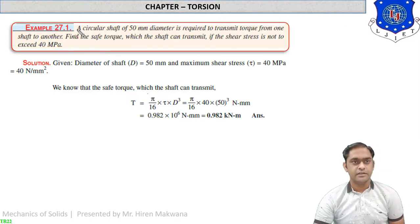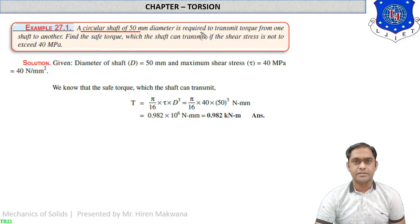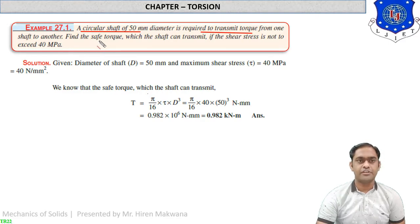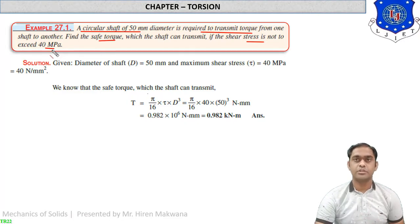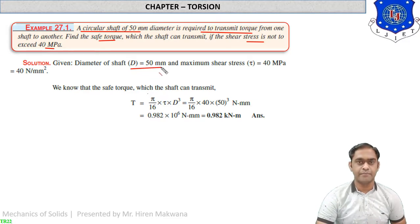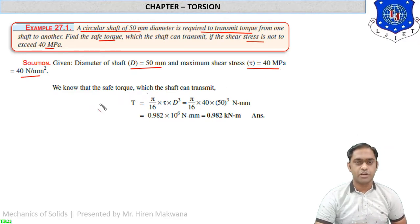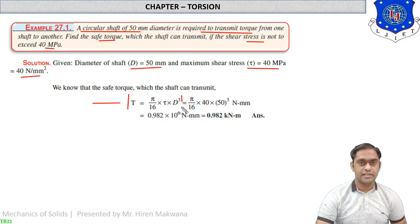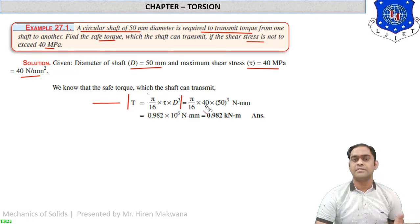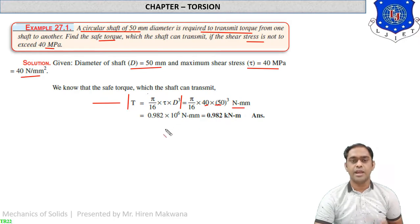Numerical 1: A circular shaft of 50 mm diameter is required to transmit torque from one shaft to another. We have to find the safe torque which the shaft can transmit if the shear stress τ is not to exceed 40 MPa. Given: diameter D = 50 mm, τ = 40 MPa (i.e., 40 N/mm²). The formula for torque is T = (π/16) × τ × D³. Replace the values of τ and D.